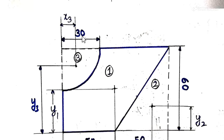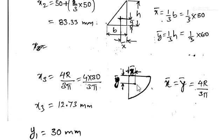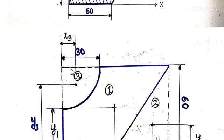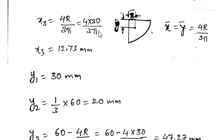For x3, the distance of the centroid of the quadrant from the y-axis: for a quadrant, the centroid location is 4r/3π from the curved side. Since the quadrant is positioned at the far edge, x3 = 4r/3π = 4×30/3π = 12.73 mm.